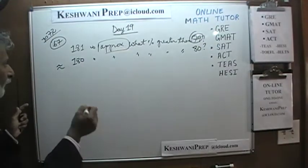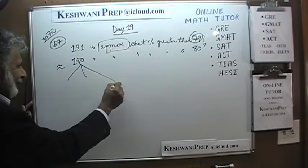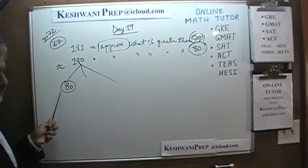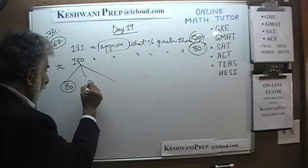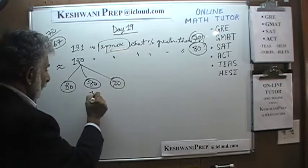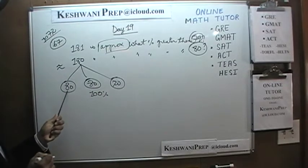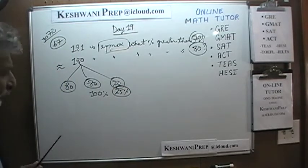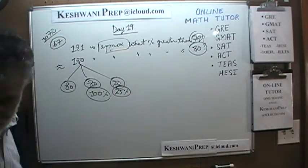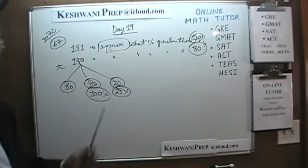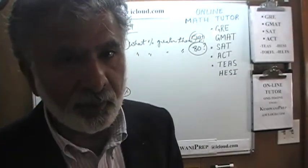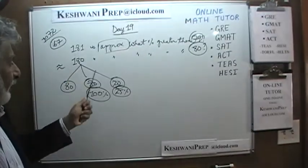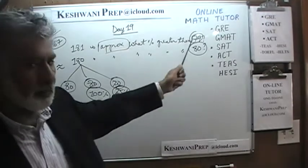That makes it very straightforward. We realize that 180 is made up of the original 80 and 100 more. That 100 can be broken down into 80 and a 20. The 80 is 100% of 80, and the 20 is one-fourth of 80, which is 25%. So 180 is 125% greater than 80, and therefore 181 is approximately 125% greater than 79.